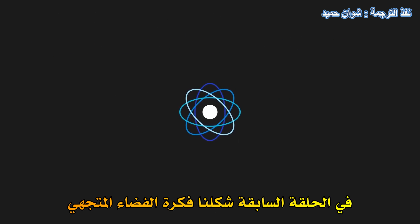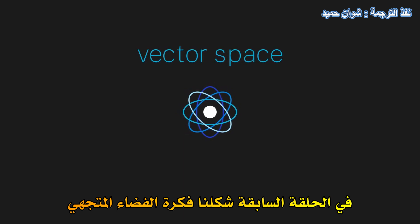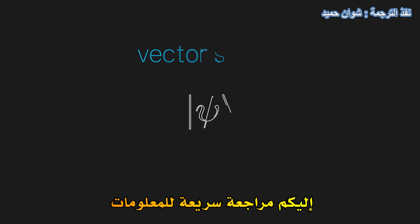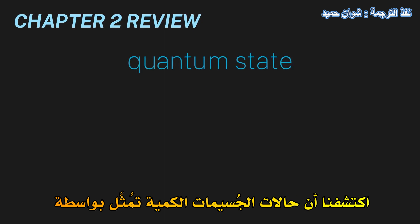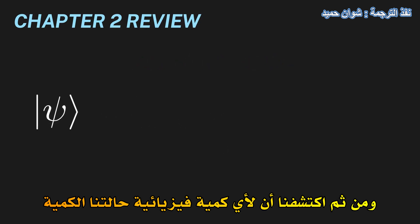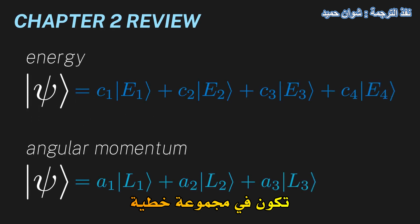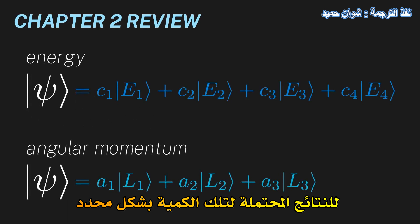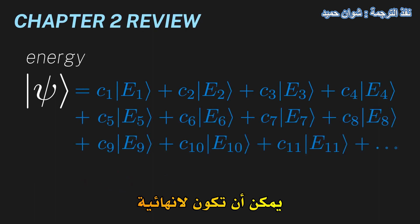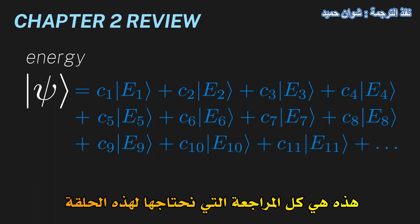Hi everyone. Last episode, we formalized the idea of a vector space in quantum mechanics. We introduced kets. Here's a quick recap of the information we need for this episode. We found that particle quantum states are represented by a ket vector in our vector space. We then found that for any physical quantity, our quantum state is in a linear combination of all possible outcome states for that particular quantity. Lastly, we found that this list of outcome states may be infinite.